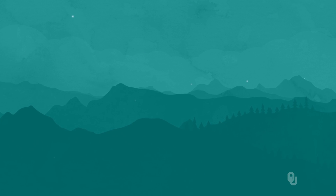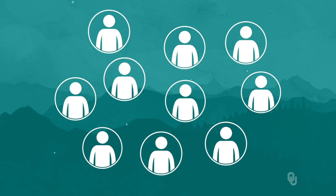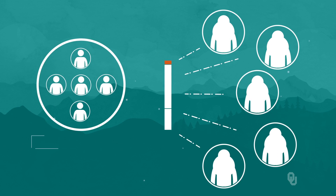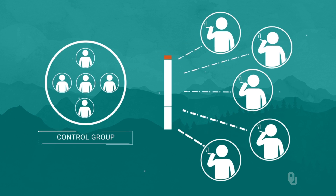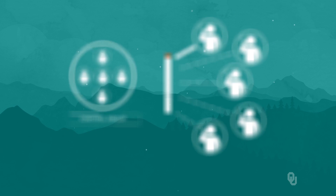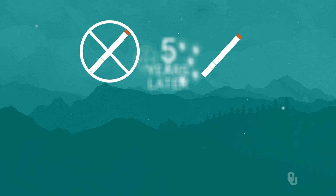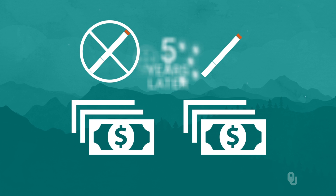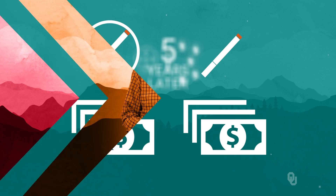Ideally we'd like to take a large sample of non-smokers and randomly assign smoking to half of them. Then, say five years later, we could compare the wages between the control group and the randomly assigned treatment group, where treatment here is being a smoker. That would give us a good estimate of the causal effect of smoking on wages.